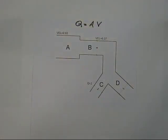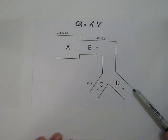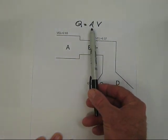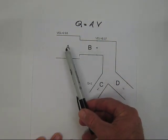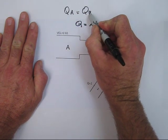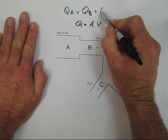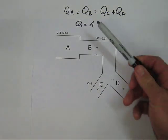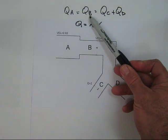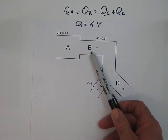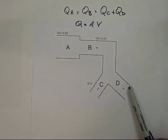In any given system with fluid running through it, we consider that the flow rate is the same throughout the system, because we consider water to be non-compressible. It's different for a gas system. So using Q equals area times velocity, we can say QA equals QB, which also equals QC plus QD. The flow rate at A equals the flow rate at B, which equals the sum of the flow rates at C and D.